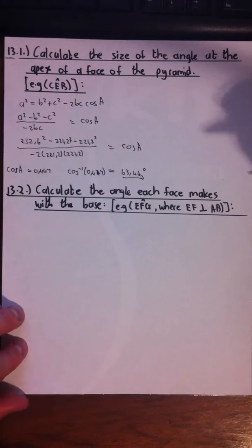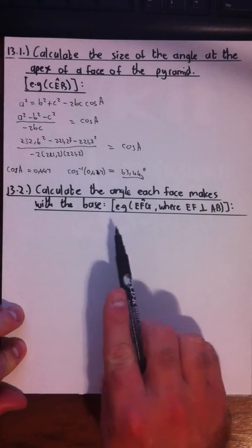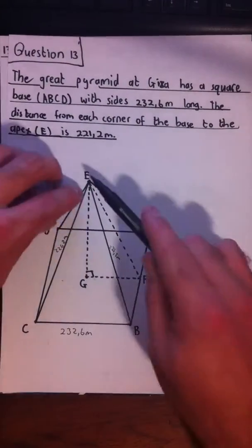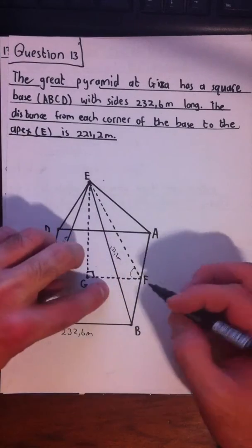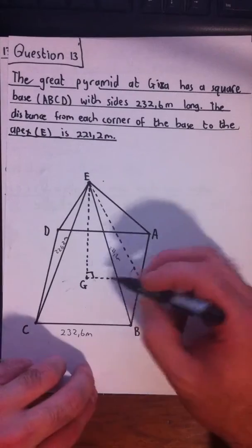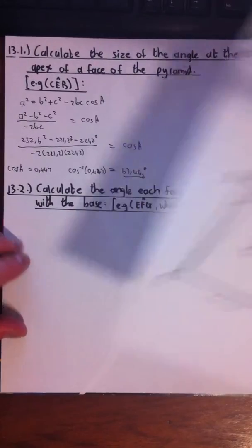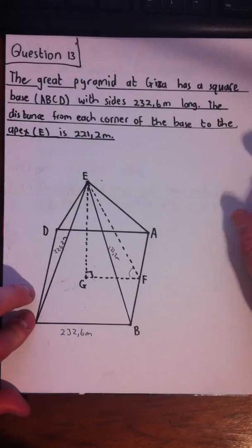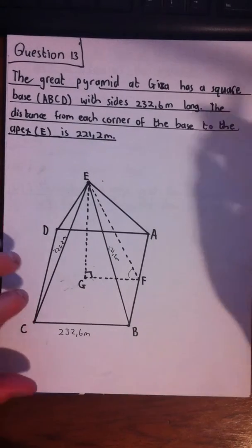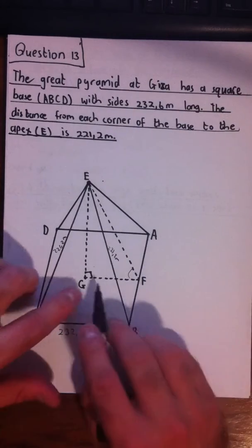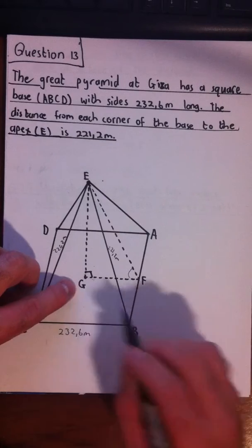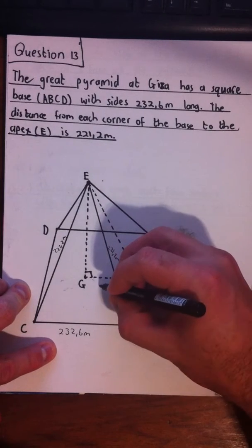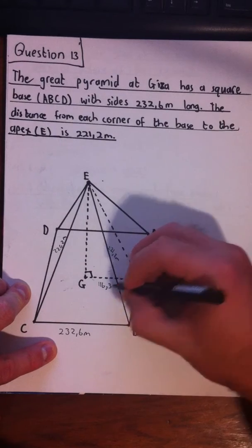Question 13.2: Calculate the angle each face makes with the base — for example, angle EFG, where EF is perpendicular to AB. So we're looking for this angle, as long as EF is perpendicular to the base FG. G is the center, so we know that this length FG is half of 232.6, which is 116.3 meters.